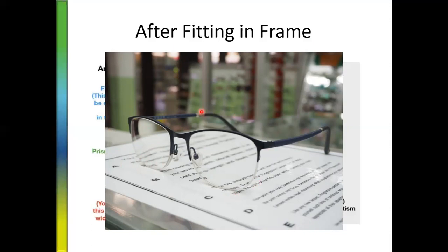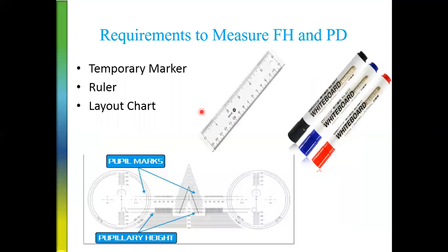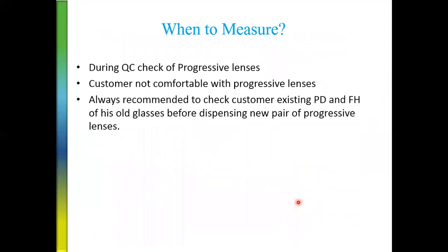Once there is no marking on the lens and everything has been erased, it becomes important to know how to remark the lens — especially when the customer comes with a troubleshoot or when you are doing a QC check. The requirements to measure fitting height or PD are: a temporary marker, a ruler, a layout chart, and your skills and experience. With these four things, you can remark the progressive lens.